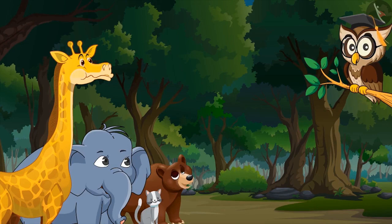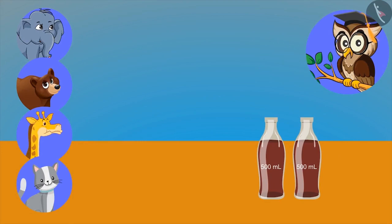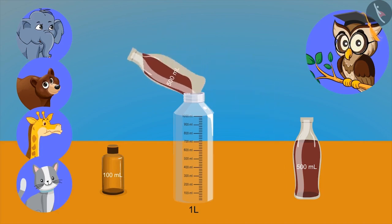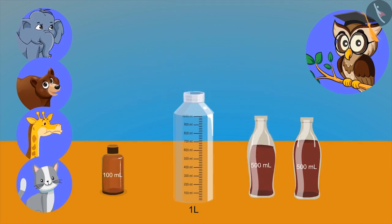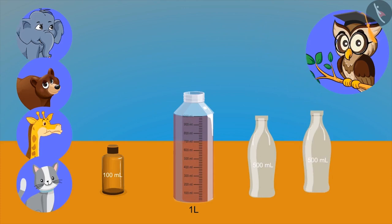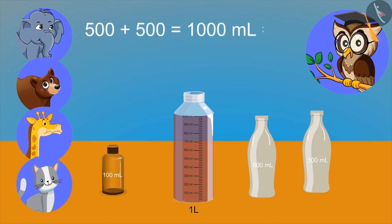Sir, please show some more examples. Look, I have two bottles of cold drink and these empty bottles of one liter and one hundred milliliter. Now, you try to pour this cold drink into this empty bottle. We cannot put five hundred ml in a hundred milliliter bottle. Now, try to put this in the empty bottle of one liter. Oh, it became full now. Yes. So, what have we learned from this? Two five-hundred-milliliter bottles make one liter. On adding five hundred milliliter to five hundred milliliter, we get one thousand milliliters, which is one liter. Five hundred ml is also known as half a liter.